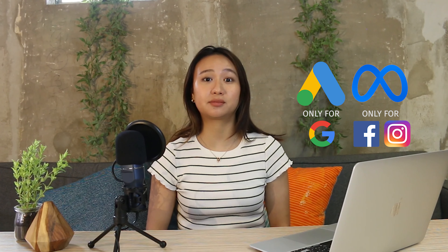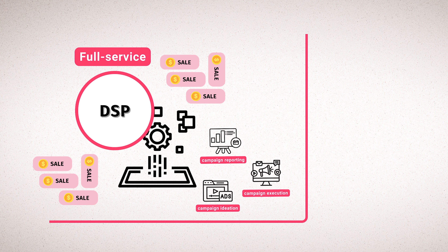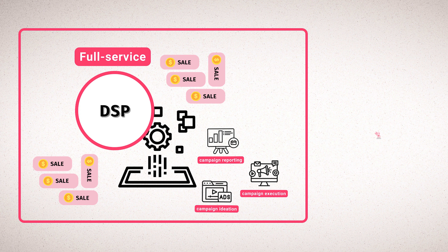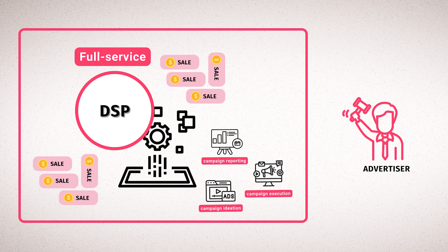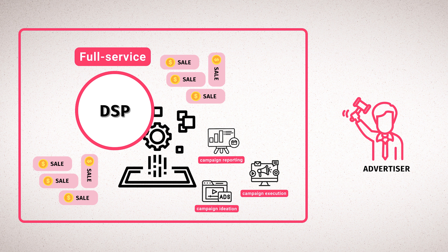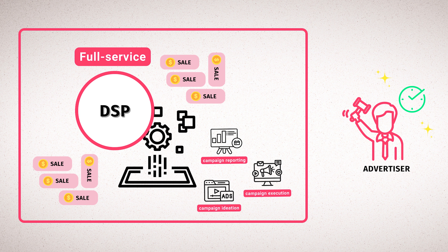The same would go for Meta's ad manager — you could create campaigns on it, but it will only serve within their products like Facebook or Instagram and not to publishers. A full-service DSP behaves more like an agency. An external team within the DSP takes control and responsibility over the campaign from start to finish. It's more expensive and the advertiser has less control over the campaign execution, but it's usually more convenient for them.